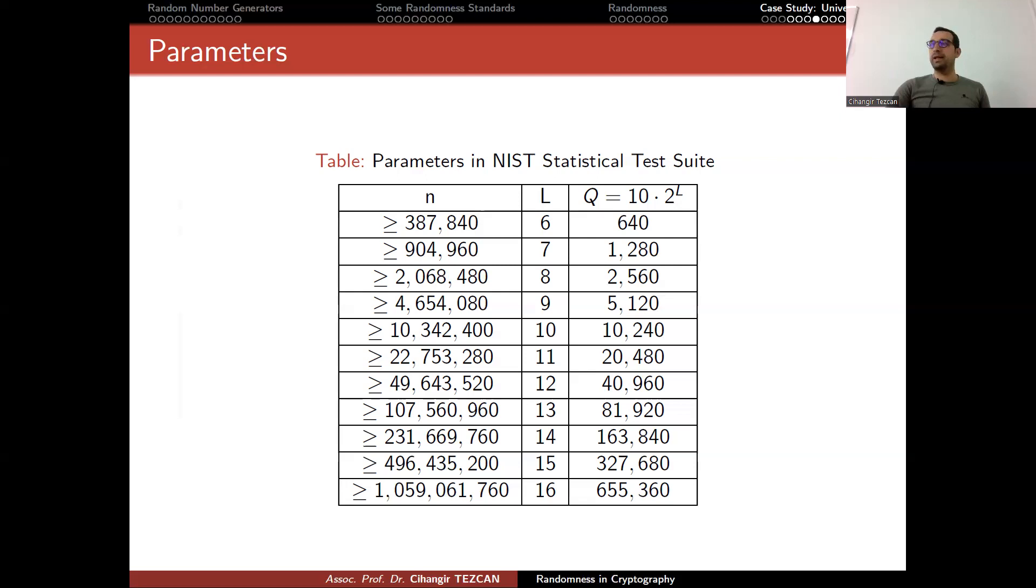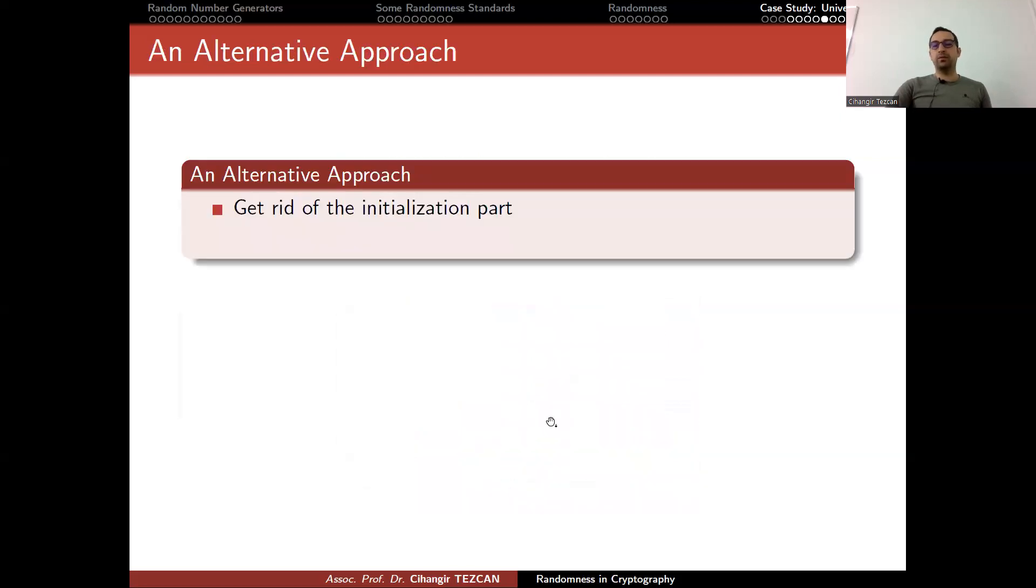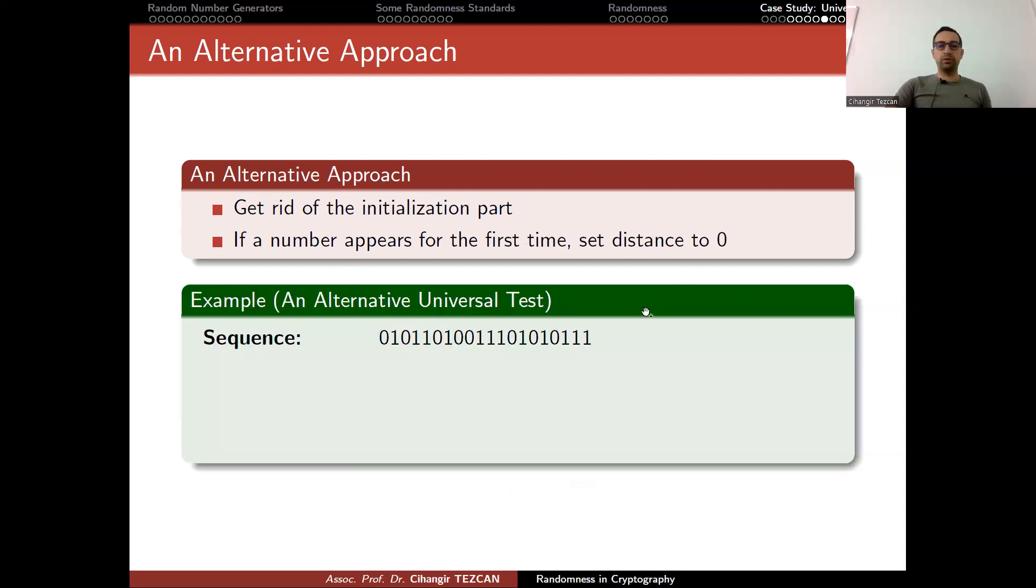Just by looking at this, we decided to propose something else that also measures a similar thing. What we propose was an alternative approach, which gets rid of the initialization part, because we lose a lot of data when we have the initialization part. If a number appears for the first time, set distance to zero. This is what we propose.